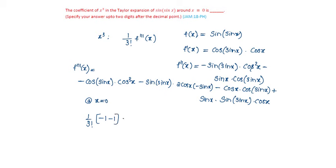That's minus 2 by 3 factorial, which is 3 times 2, equal to minus 1 by 3. That is minus 0.33. So the answer is minus 0.33.